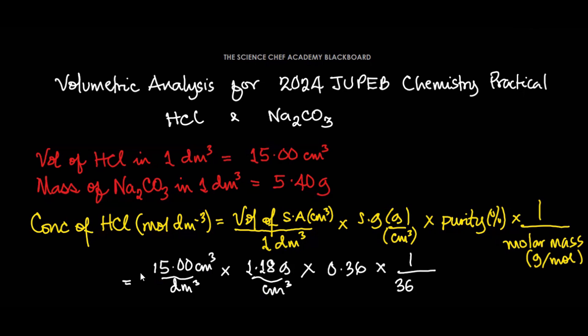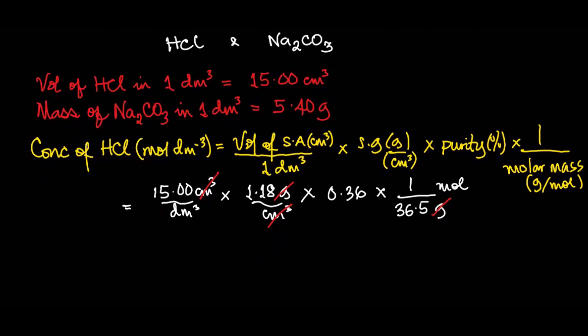The molar mass of HCl is 36.5 (hydrogen is 1 and chlorine is 35.5), so that would be 1 over 36.5 g/mol. The units will cancel out easily: cm³ cancels, grams cancel, leaving mol/dm³. So if we evaluate this you obtain 0.175 mol/dm³, which has to be in 3 significant figures.